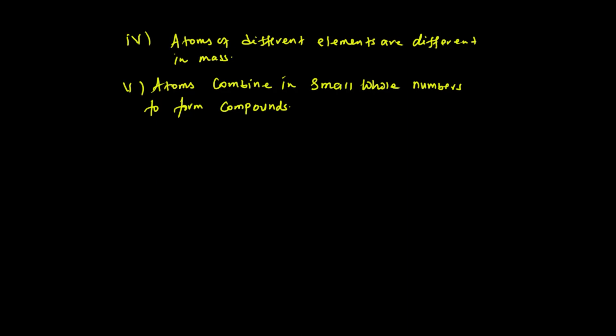What you should keep in your mind from today's lesson: you have to state or describe the Dalton atomic theory and modern atomic theory. You have to compare and contrast the Dalton atomic theory with modern atomic theory. You should also know the limitation or drawback of the atomic theory, as well as the advantage and strength of the atomic theory. This is enough for today.